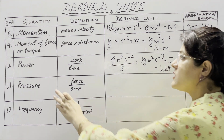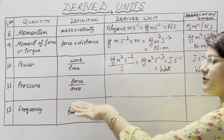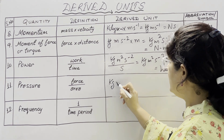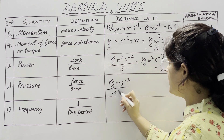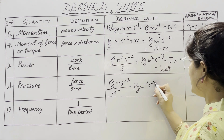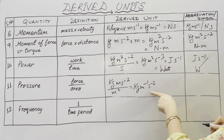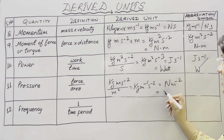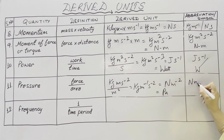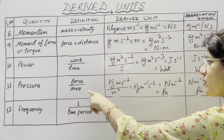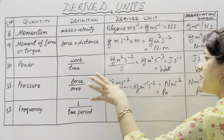The next physical quantity is pressure, defined as thrust per unit area, or force per unit area. The SI unit of force is kg m s⁻² and area is meter square, so the unit of pressure is kg per meter per second square, or newton per meter square. Its SI unit is pascal. Pressure is said to be 1 pascal when a force of 1 newton acts perpendicular on an area of 1 meter square.